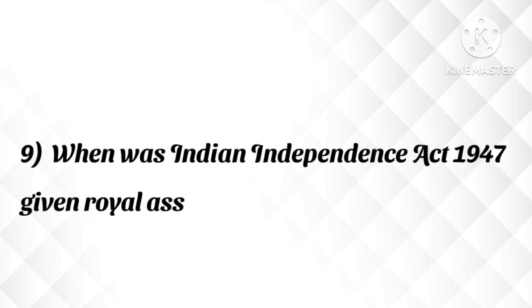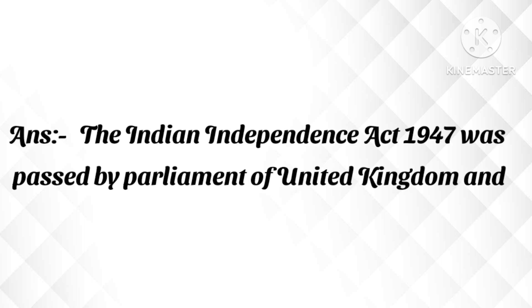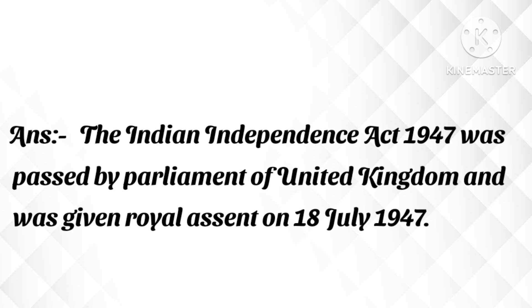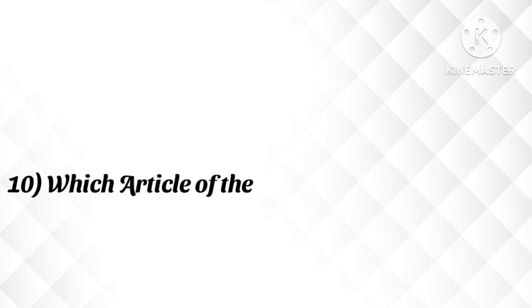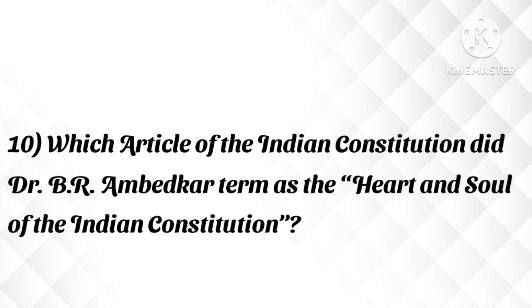When was the India Independence Act 1947 given royal assent? The Indian Independence Act 1947 was passed by the Parliament of the United Kingdom and was given royal assent on 18 July 1947. Which article of the Indian Constitution did Dr. B.R. Ambedkar term as the heart and soul of the Indian Constitution?